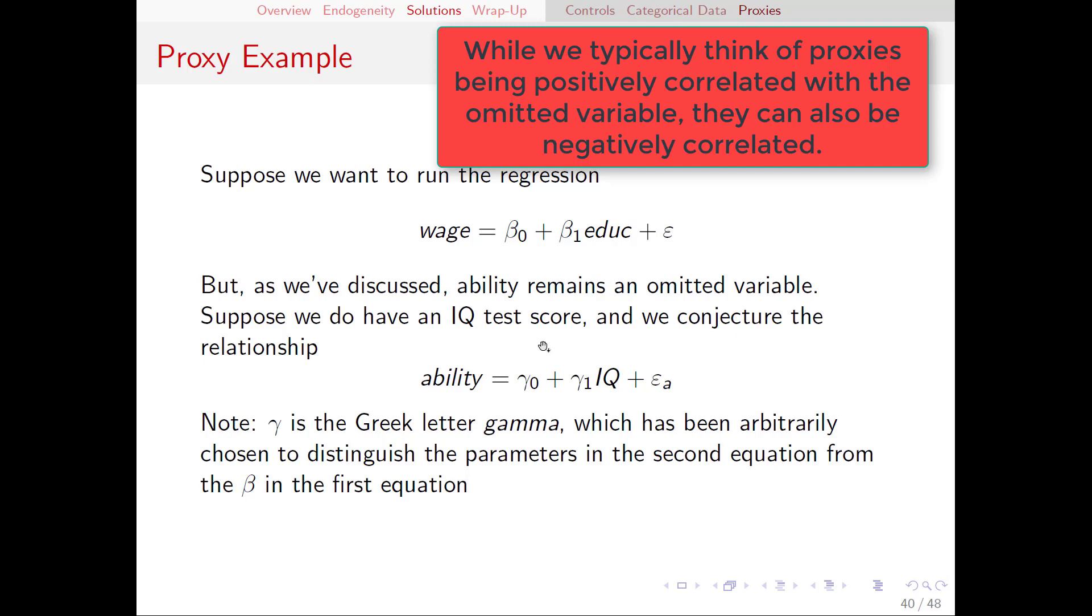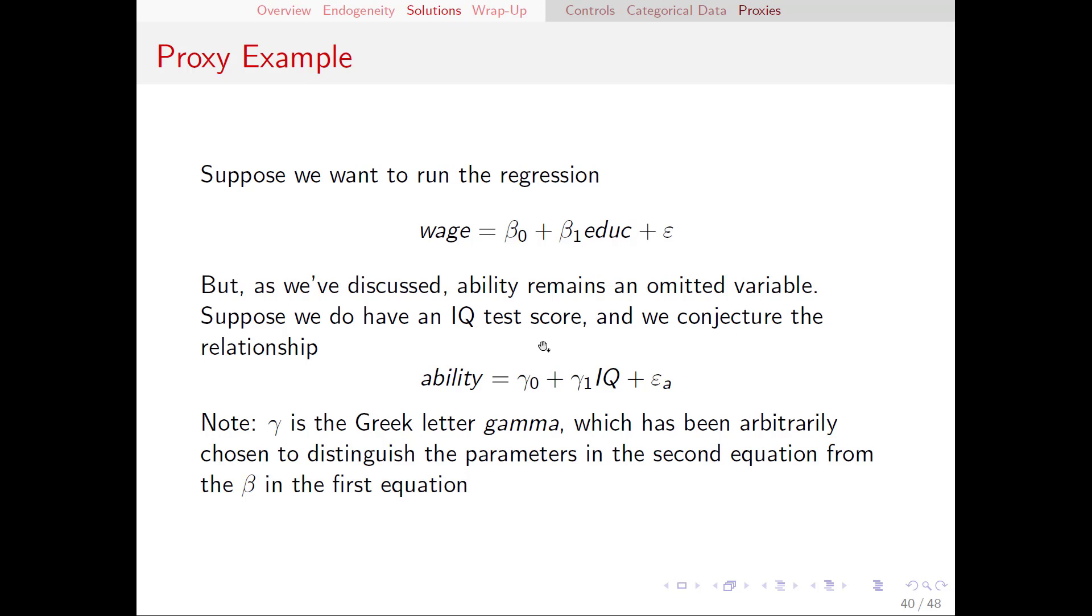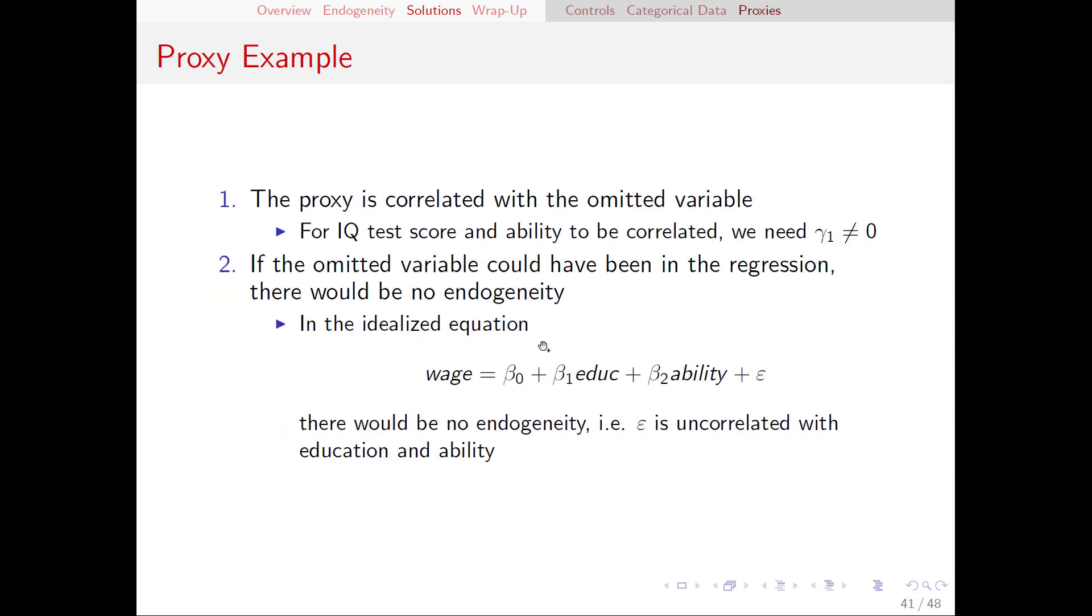In a mathematical sense, what we need to be true is that in this second equation here, gamma one needs to be non-zero. If gamma one were zero, then there's no relationship between IQ and ability, and IQ is useless as a proxy. So we need that to be a non-zero number. This is the first and most basic requirement of a proxy.